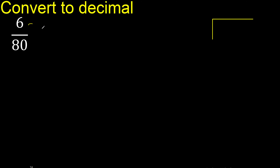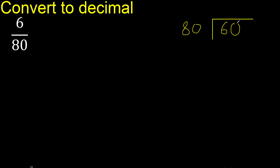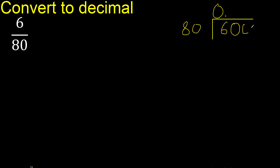6 divided by 80. 6 is less than 80, therefore complete — always complete with 0, and here 0 point. 60 is less than 80, therefore complete 0. So we have 0.0 so far.